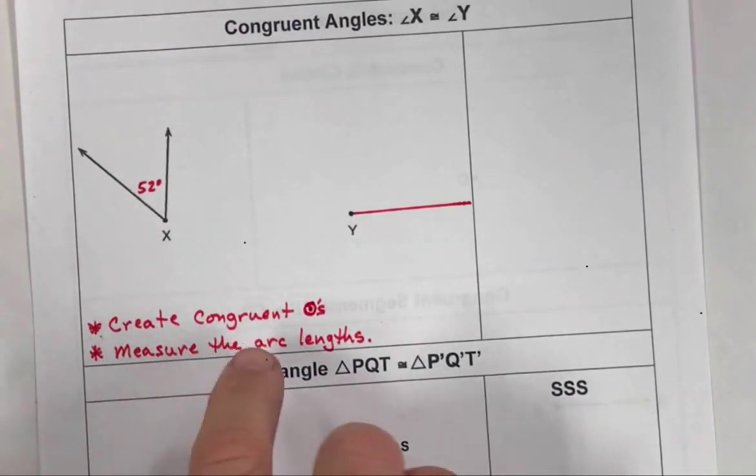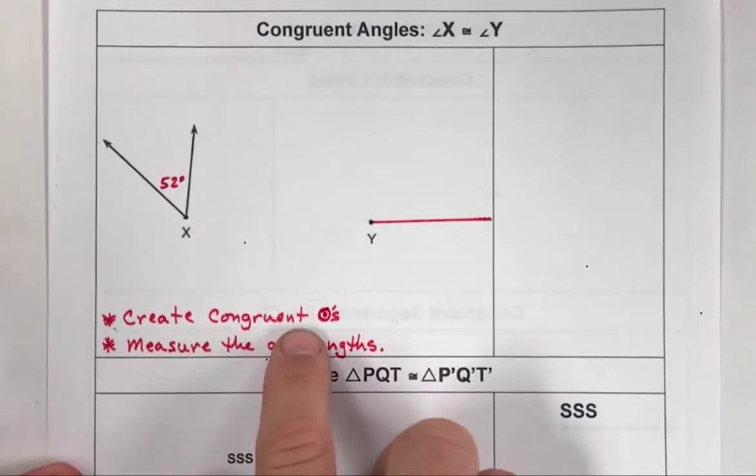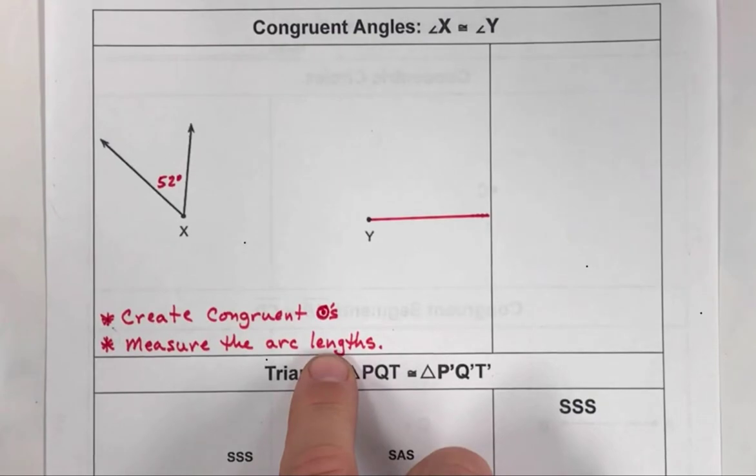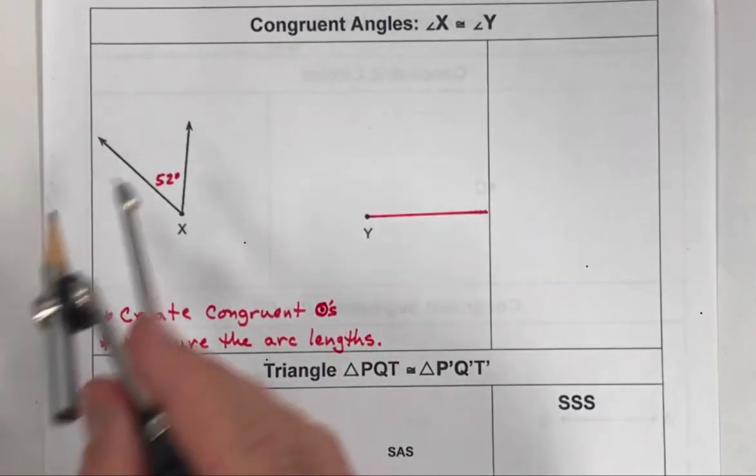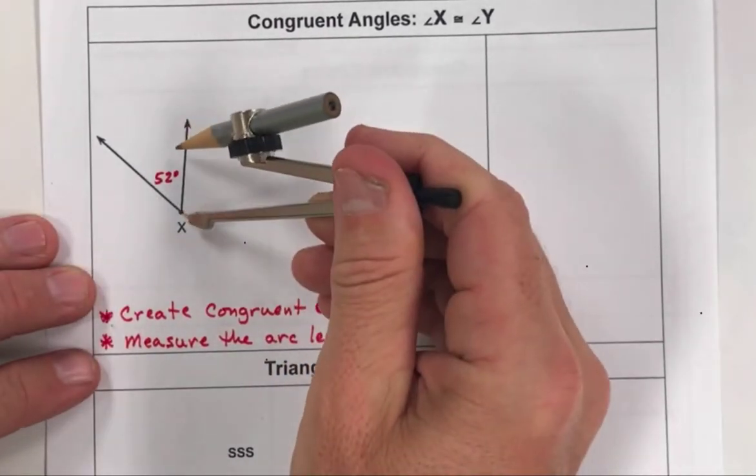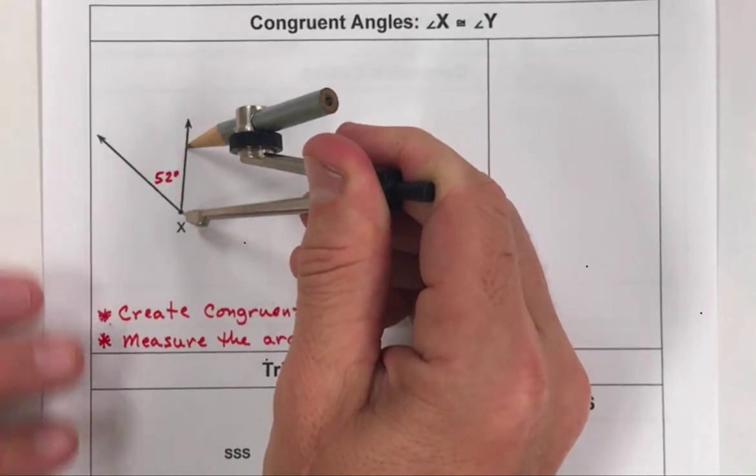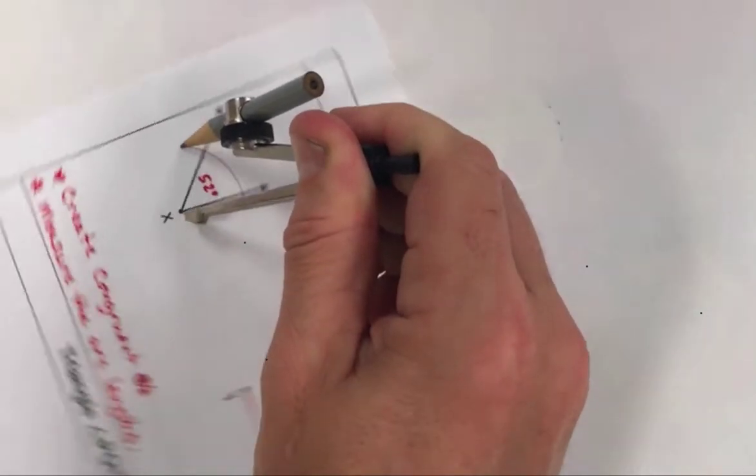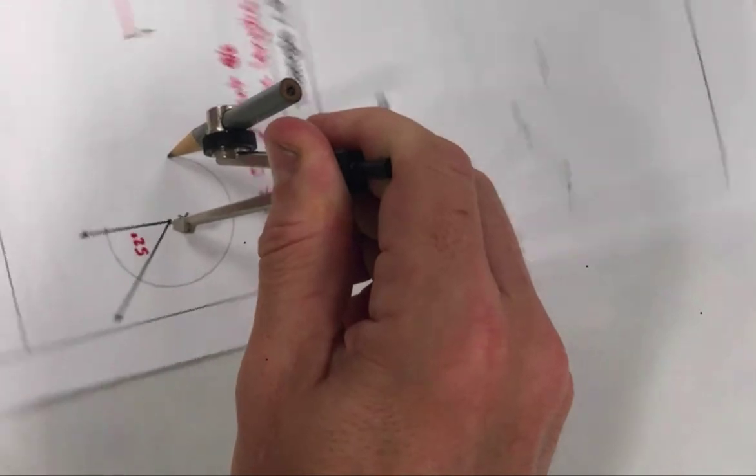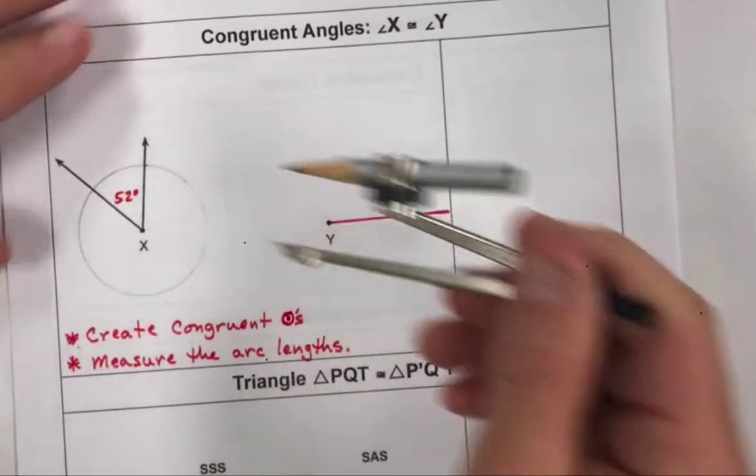And the next thing we want to do is use this strategy right here. We want to create congruent circles and then also measure the arc length that's within that circle about how wide that angle is. So first, take your sharp edge and let's create the circle around point X. What we're going to do is create this exact same circle around point Y.